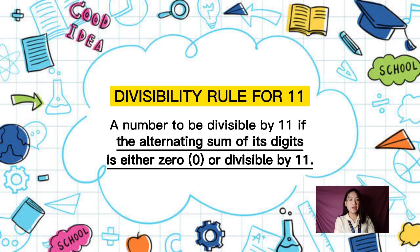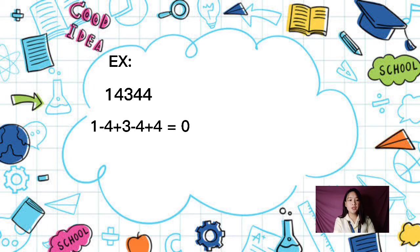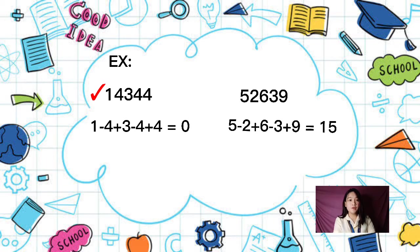A number is divisible by 11 if the alternating sum of its digits is either 0 or divisible by 11. For example, 14,344: the alternating sum is 1 minus 4 plus 3 minus 4 plus 4 equals 0, so it is divisible by 11. On the other hand, 42,639 is not divisible by 11 because the alternating sum of its digits is 15, which is not divisible by 11.